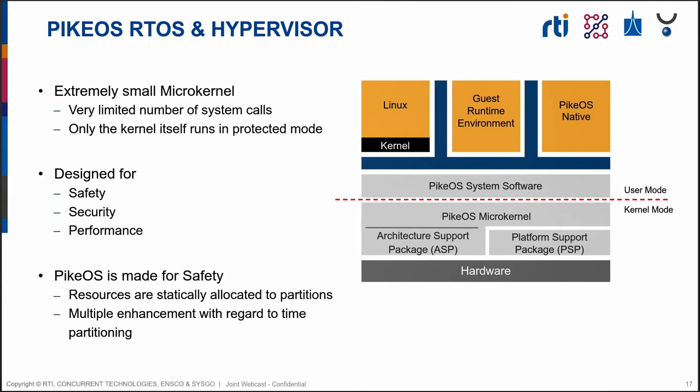PikeOS is a very small microkernel — only about 6,000 lines of code — and is modular, consisting of architecture support and platform package support, close to a BSP. The entire microkernel runs in kernel mode, while software sets up partitions running in user mode. Those partitions have their own small operating system in user space and are strictly separated, with PikeOS assigning strict resources in terms of memory, I/O, and time. The whole design targets safety and security, using para-virtualization for the highest level of performance.